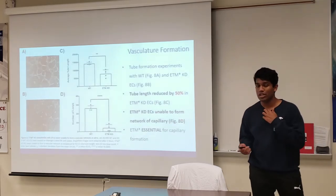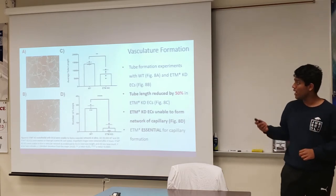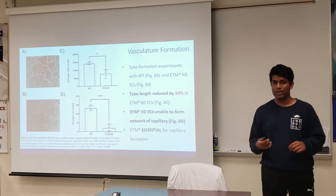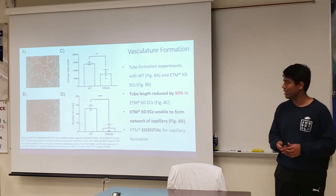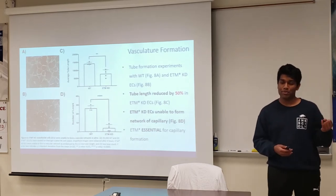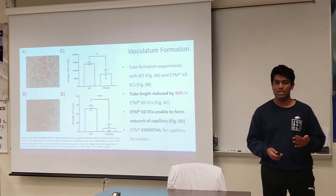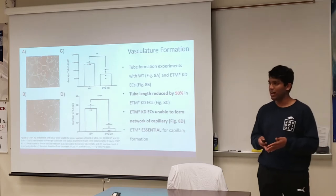And lastly, I conducted a tube formation assay, where I noticed that the depletion of ETM resulted in an inability for endothelial cells to organize into vasculature in vitro. So together, impaired proliferation, migration, adhesion, sprout formation, and tube formation suggested ETM as a regulator for angiogenesis.